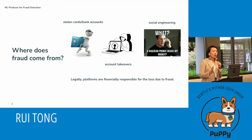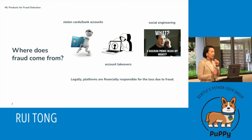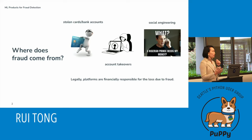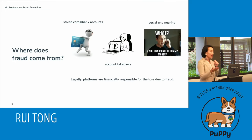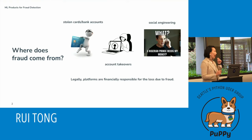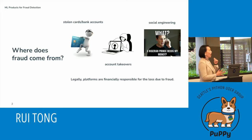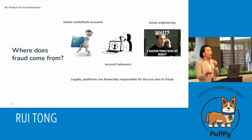Let's start by building a little bit of context first. Where does the fraud come from? The first category is just stolen card — credit card, debit card, bank account. Maybe most of you would have the experience of seeing an unauthorized charge on the bill statement and thinking, where does this charge come from? I'm talking about charges or transactions that are truly not authorized by you or any of your family members.